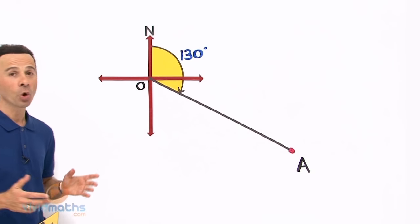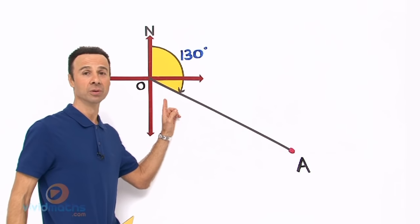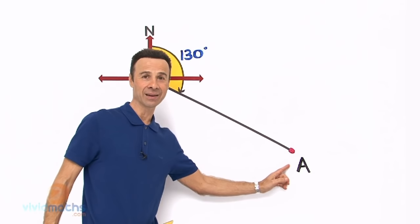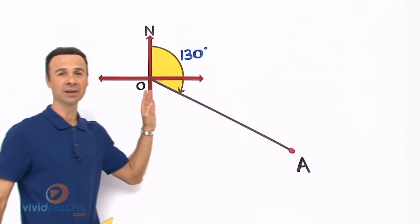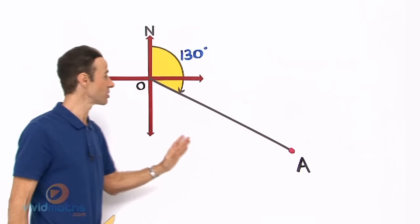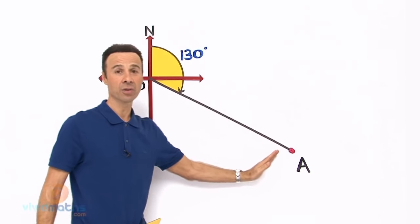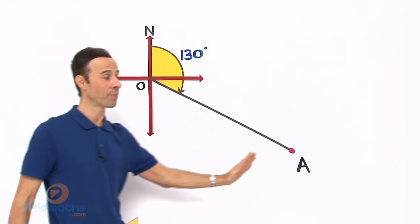In this particular question, let us take a closer look. We are asked to find the bearing of O from A. In other words, we have to go from here back to here. Now what we are given is the bearing from here down to A. In other words, NOA, the bearing is 130 degrees, so we need to go backwards.